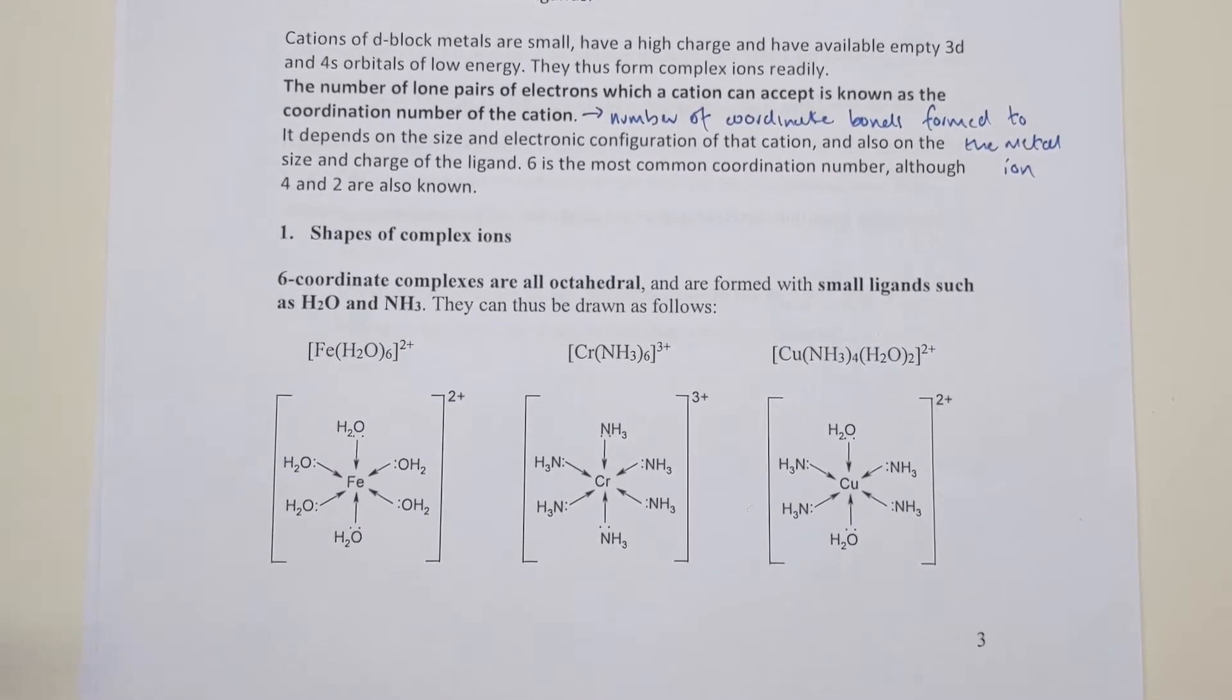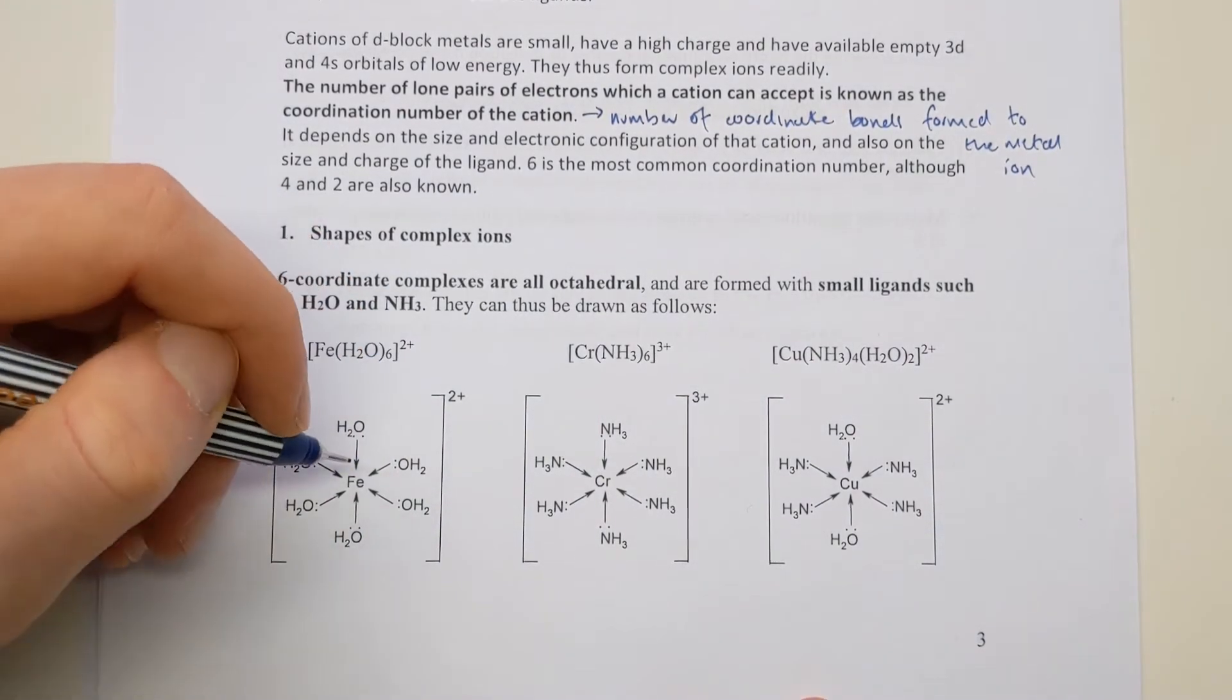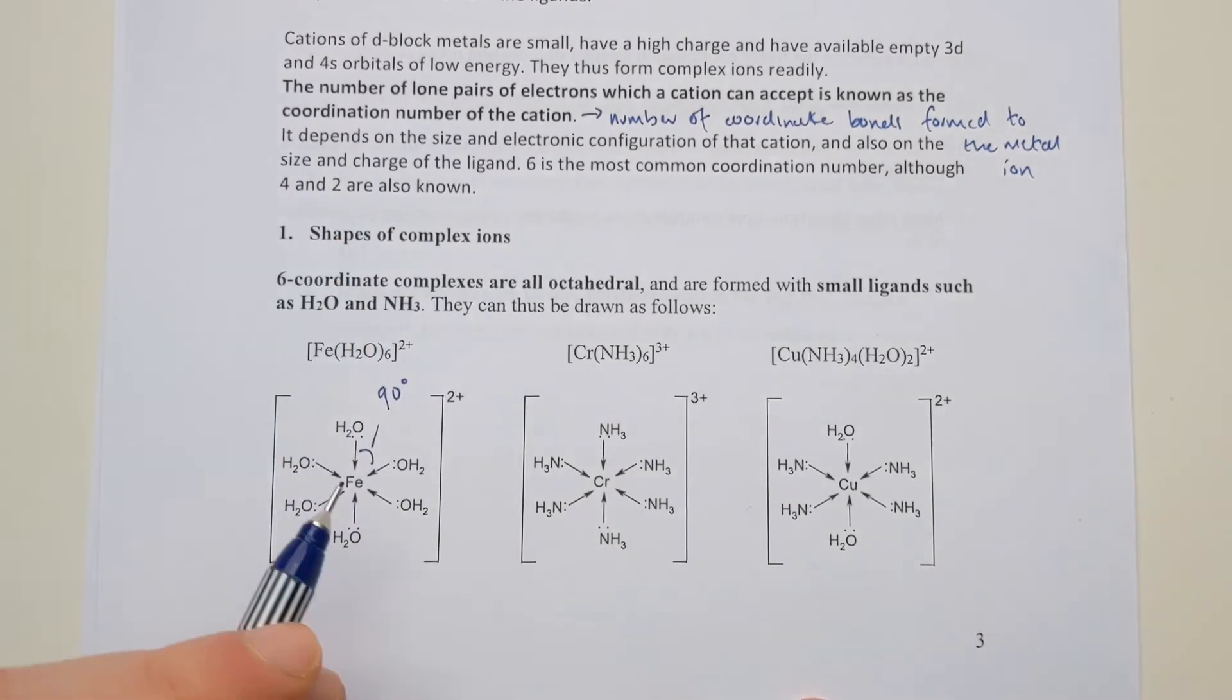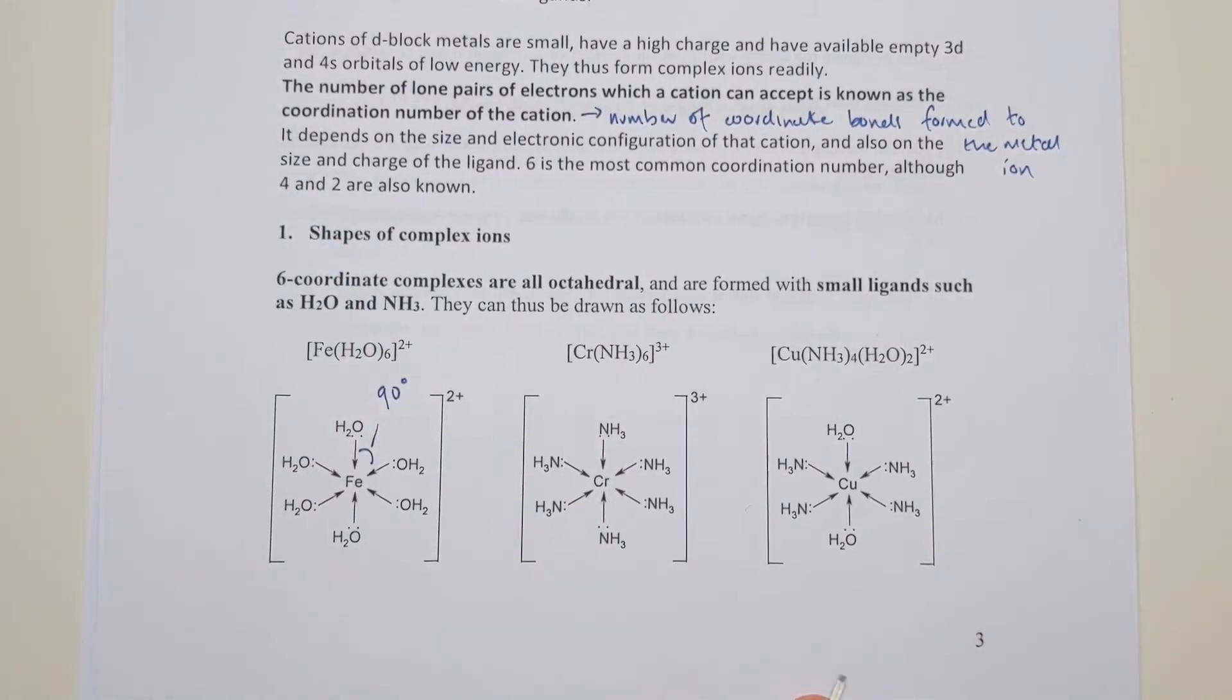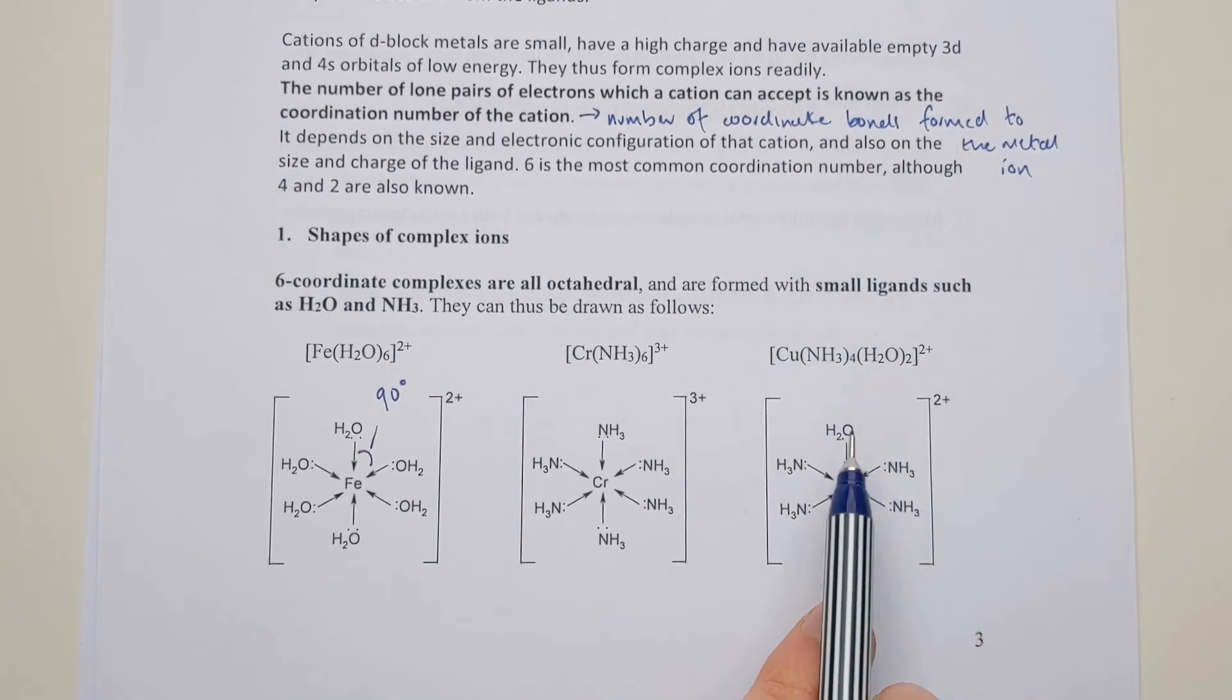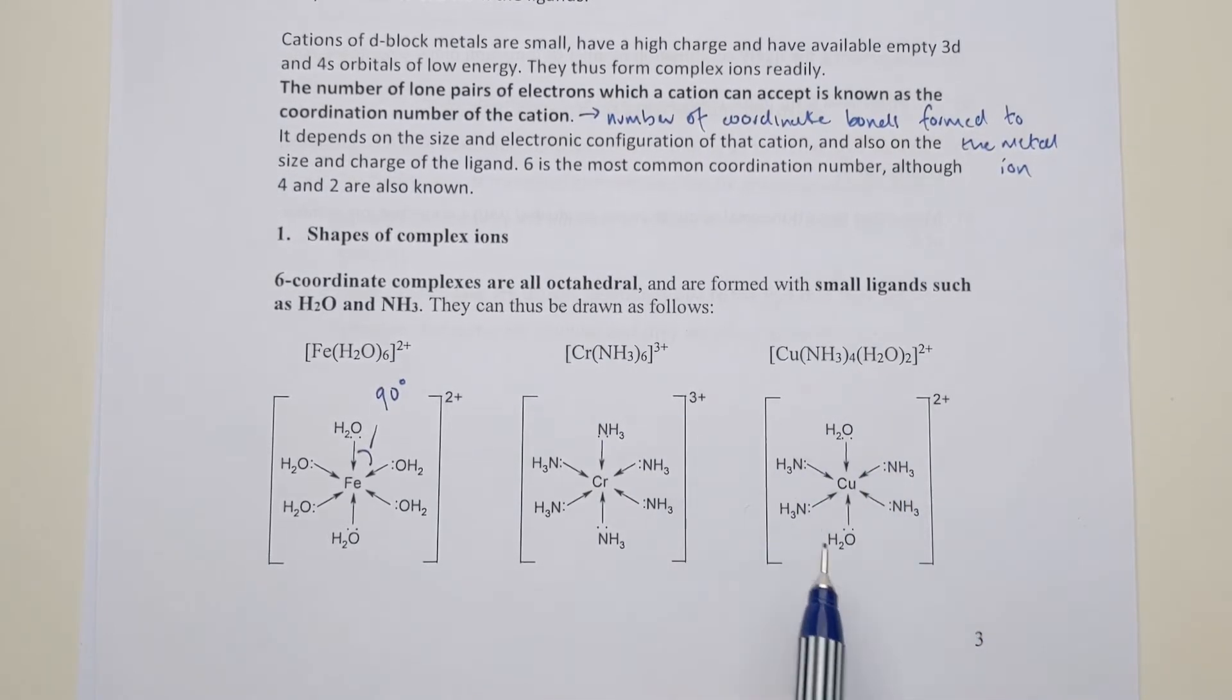Octahedral is in the same sense we looked at last year. It does mean they're all at 90 degrees to each other, so the bond angle is 90 degrees between all the ligands in these complexes. It doesn't matter whether it's just water, just ammonia, or a mixture. The same bond angle is found between all of these ligands in this complex.